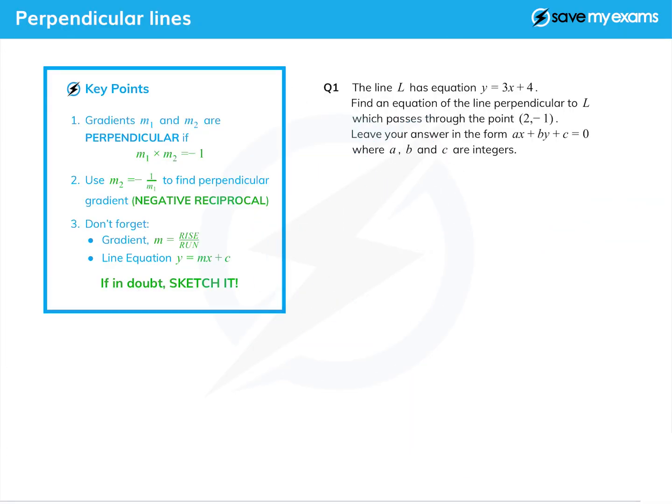In this tutorial we're going to look at perpendicular gradients and how we work with them. If we have two gradients, m1 and m2, and they're perpendicular, then they multiply together to give minus one.